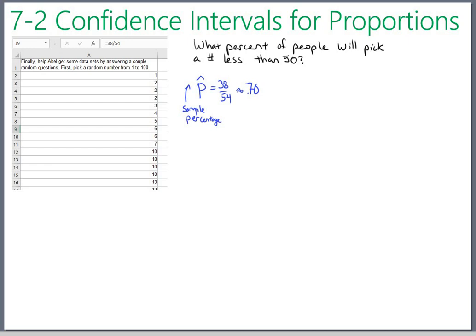So definitely more than 50% of people pick a low number, at least in this sample. So the real question is, are you guys just weird? Is it possible that the population is really around 50%? Or is this good evidence that people generally just like to pick a lower number?